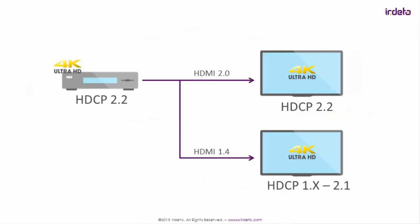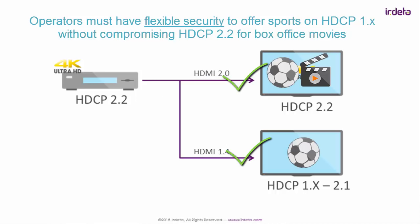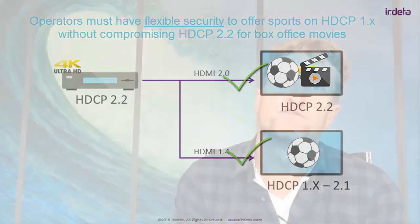However, the same operator might have premium sport content and will absolutely require that premium sport can go out on HDCP 1.x. And unless that operator has technology that can securely signal and allow the 1.x path to be enabled without compromising the HDCP 2.2 for box office, they will not have a business model.